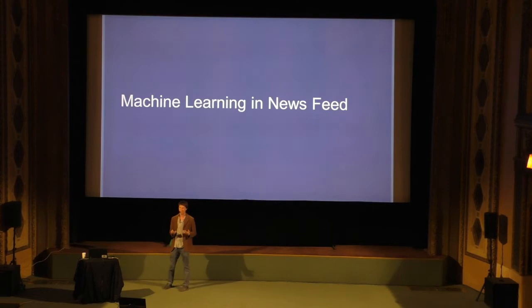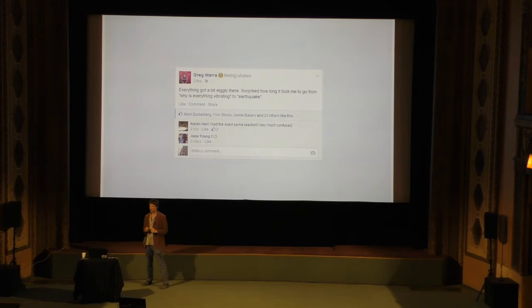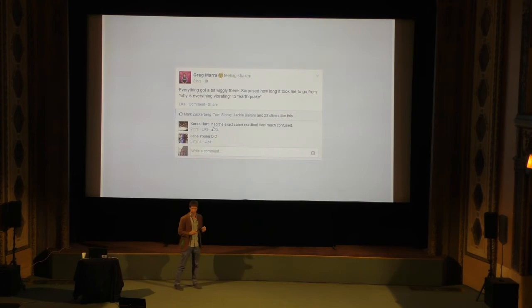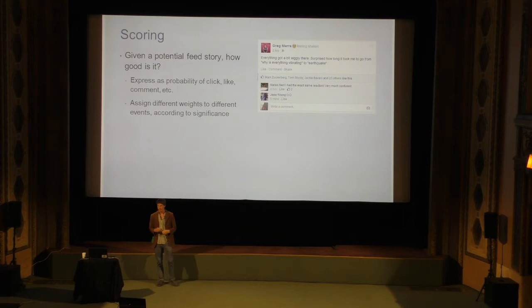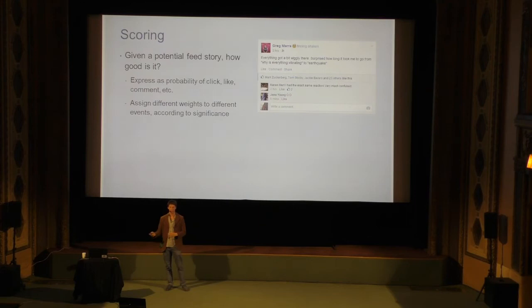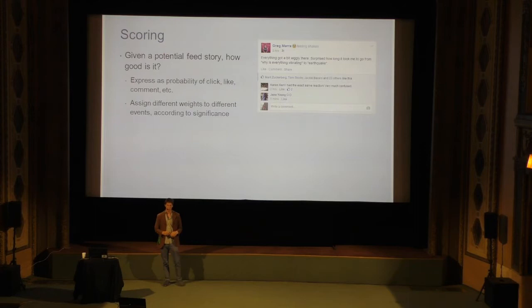The key area where we use machine learning is computing those scores — of all the things we could show you, how do we decide which go at the top? We model this as a ranking problem where we predict the probability that I, as the viewer, will interact with a story in various ways: click, like, comment, and other downstream outcomes. We predict a probability for each of these events, assign values to them, and compute the final score as a dot product of those probabilities and values.